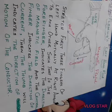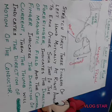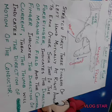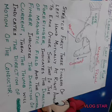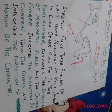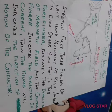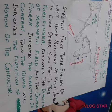Whenever a current-carrying conductor is placed in a magnetic field such that the magnetic field is not parallel to the current, it experiences a force that tends to push it out of the magnetic field. This is known as the action of a magnet on current.